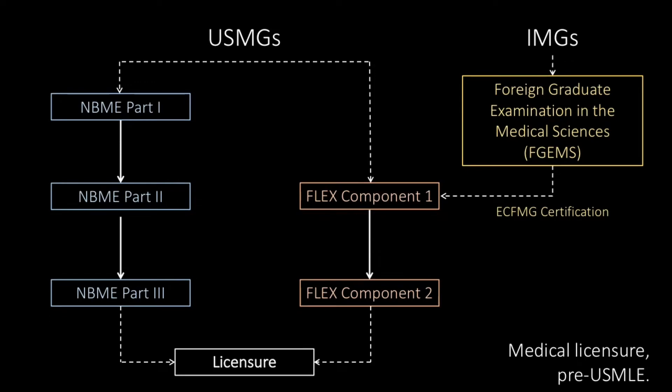Event number one was the creation of the USMLE in 1992. Before then, for US medical graduates there were two parallel pathways to licensure: you could take the NBME exams, which resembled the three-part USMLE series that would follow, or you could take a different exam called the FLEX — the Federation Licensing Exam. After the USMLE, there was a single pathway to licensure for everyone, and for the first time a single common measuring stick that could be used in applicant evaluation or screening.